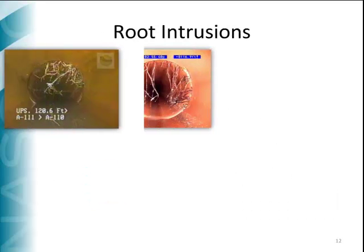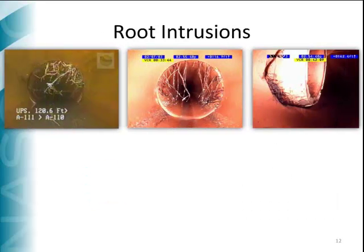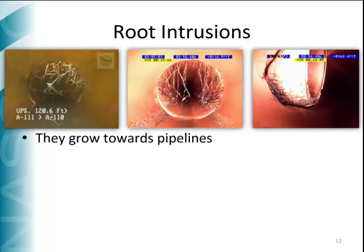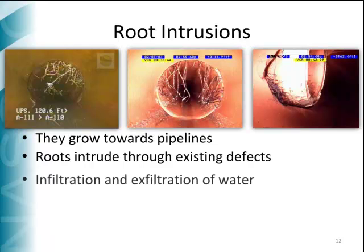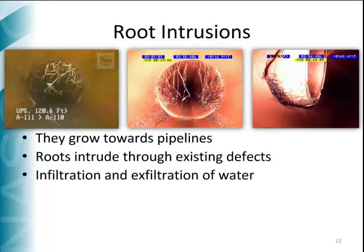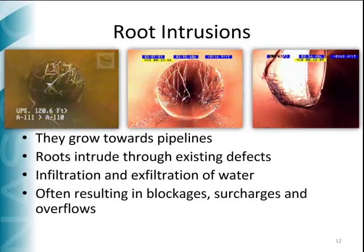Due to the less consolidated nature of the pipe surrounding soil in trenches, roots always tend to grow towards pipelines. When roots reach the pipe structure, they expand and intrude through the points of least resistance, which are often defects in the pipe. The infiltration and exfiltration of water puts fertilizer in the surrounding soil, accelerating root growth towards the pipeline. The subsequent root growth inside the pipeline generates blockages, surcharges, and overflows.